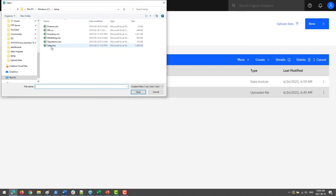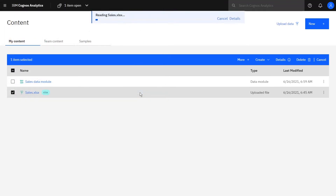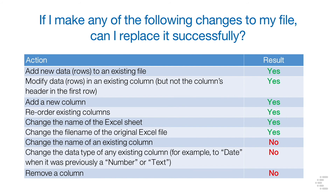Navigate to the new file with the new extra data in it and click Open. If we simply add new rows of data to the original file, such as adding a new month or quarter of sales data, the replace will work perfectly. Here is a table that shows a set of common revisions and the result if you replace the original file. For example, adding a new column is okay, but removing an existing column will cause an error.